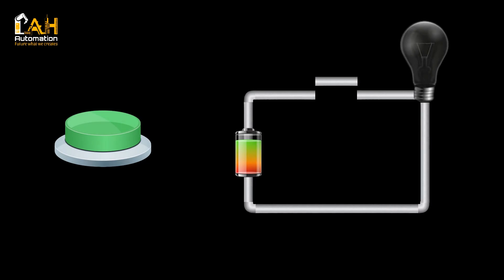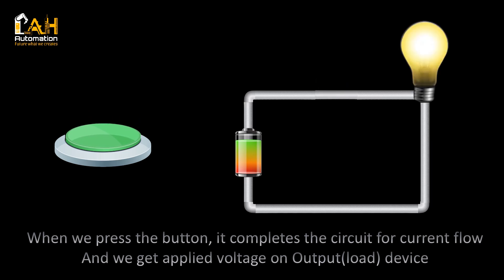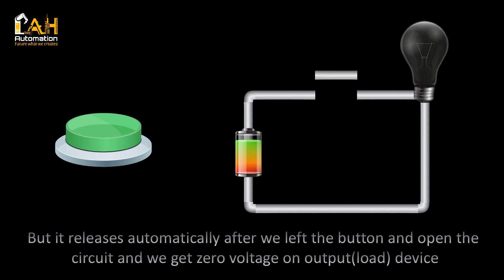When we press the button it completes the circuit for current flow and we get applied voltage on output load device. But it releases automatically after we left the button and open the circuit and we get zero voltage on output load device.